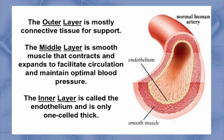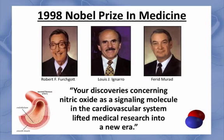Nitric oxide acts as a signaling molecule — this means the body uses it to cause something else to occur. Damage done to the endothelium directly affects your body's ability to produce nitric oxide, the master signaling molecule of your entire cardiovascular system. Because nitric oxide is an environmental pollutant and a dangerous free radical, most researchers discounted nitric oxide as a benefit to the workings of your body. However, the 1998 Nobel Prize in Medicine was awarded to three American researchers who discovered how your endothelium cells convert the essential amino acid L-Arginine into nitric oxide.